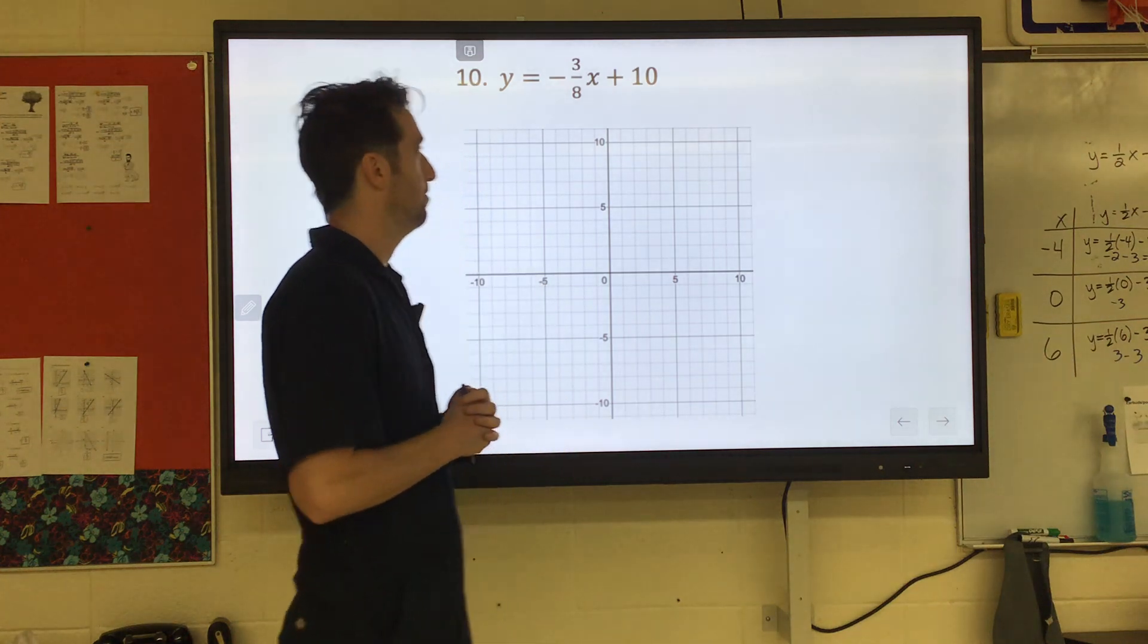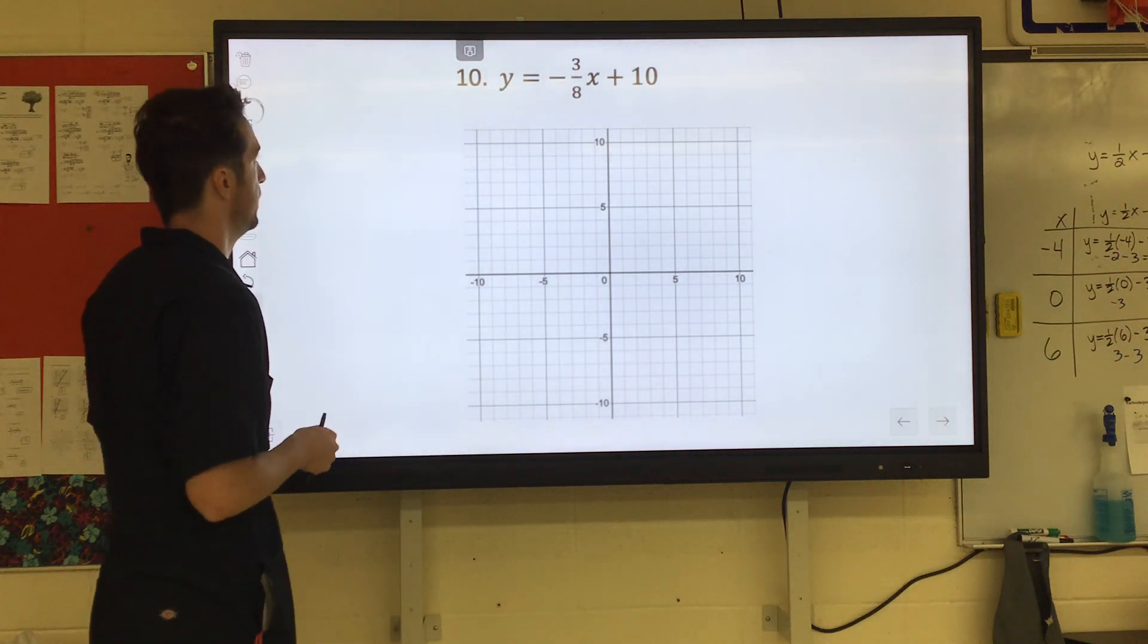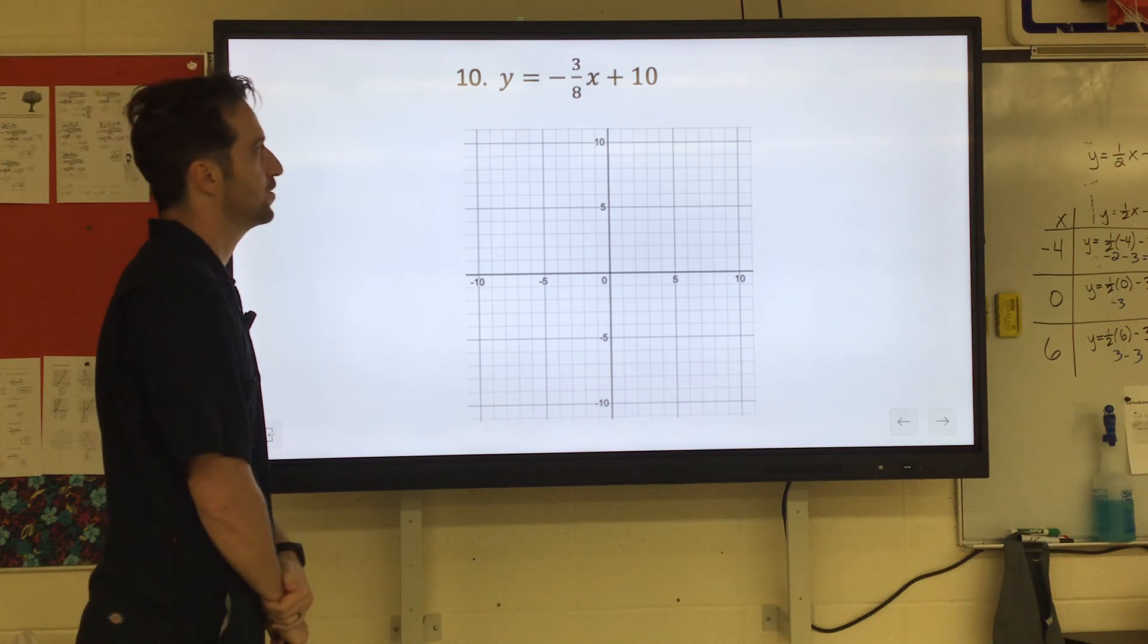On the second page, it's all in slope intercept form, so that page should go pretty quickly. If you look at number 10, it says y equals negative three-eighths x plus 10.